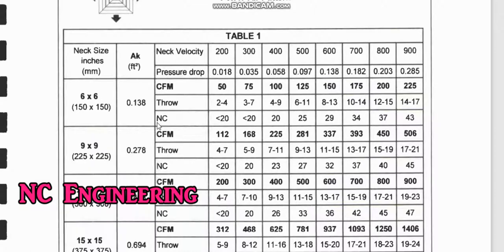Suppose we have 225 CFM and we need to select the diffuser for it. Let us start from the smallest size, the 6 by 6 inch, and see the CFM 225. When we reach 225, we see the branch velocity is going very high — 900 — and the NC level is also going up to 43.